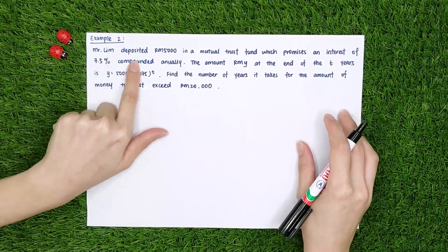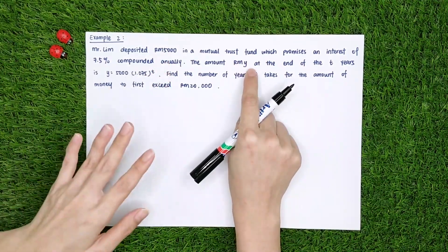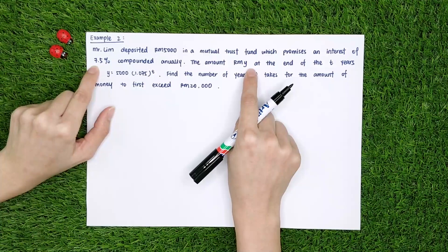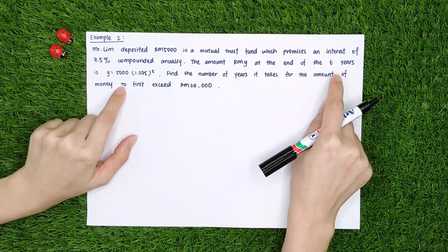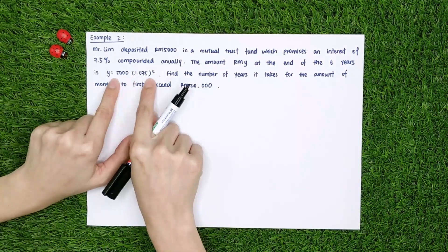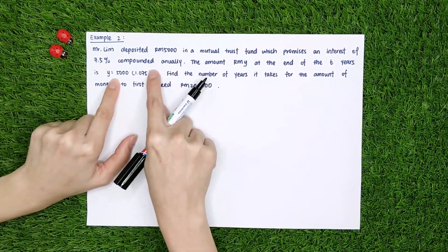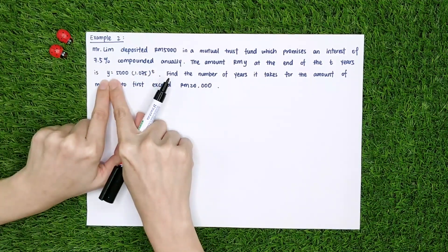Okay, this person, Mr. Lin deposits $5,000 in a mutual trust fund. And it promises every year, it will give him a 7.5% of interest. Okay, after 3 years, that means after 5 years or after 6 years, it follows this equation. If after 6 years, you apply the t equals to 6 here, then you know you will get how much money.